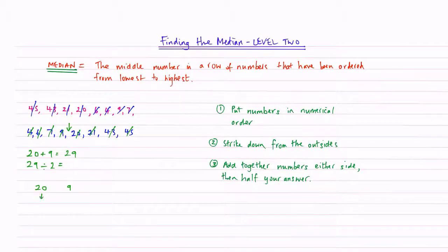So half of 20 is going to be 10. Half of 9 is 4.5. Then all we do is add these two numbers together. So 10 plus 4.5 is 14.5. So my median for example 3 is 14.5. So median is 14.5.